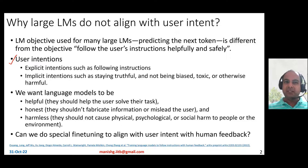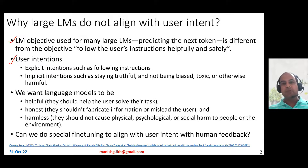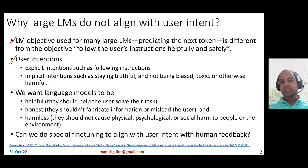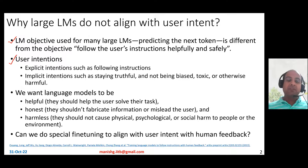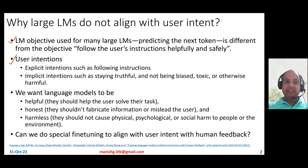So why can't today's general language models do that? The main reason is that the language modeling objective for most large language models like GPT has been to predict the next token, which is actually very different from the objective of following the user's instructions helpfully and safely. That is the reason why these large language models do not align with user intent.